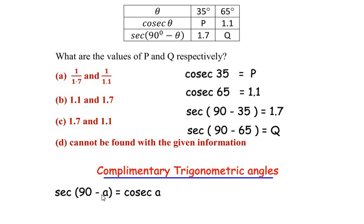Now if you look at this relationship, it resembles the third and fourth values of the table, that is sec of 90 minus 35 and sec of 90 minus 65. So let us consider the first one, that is sec of 90 minus 35, and put it over here.